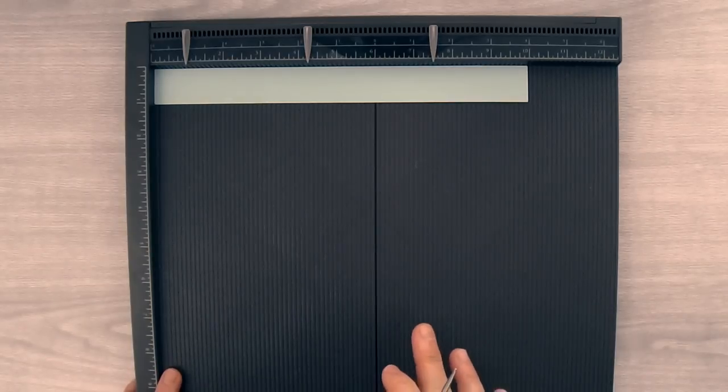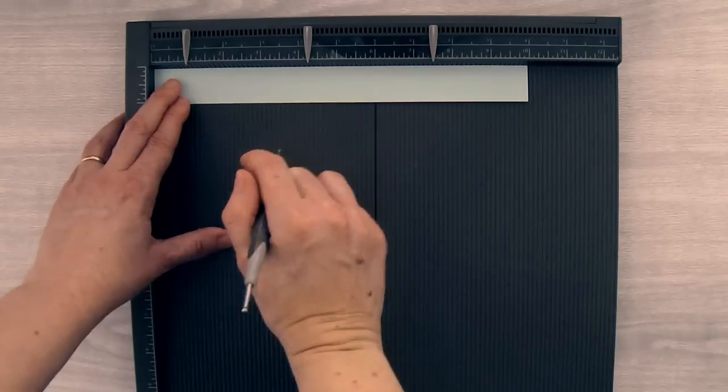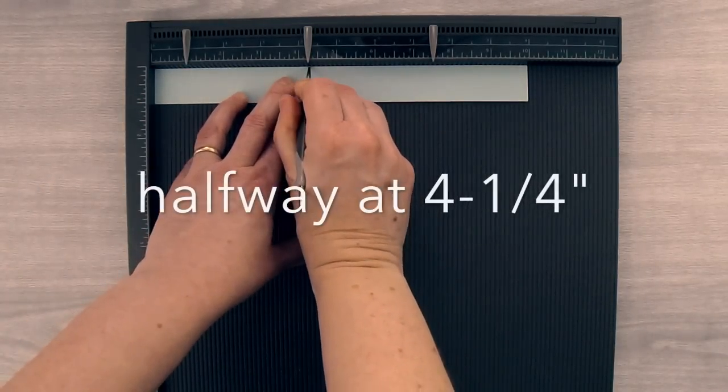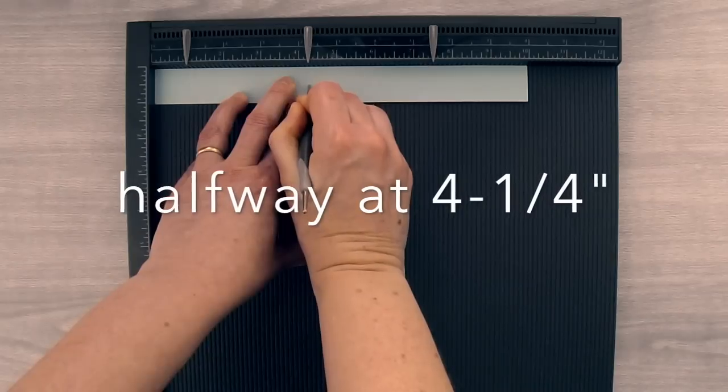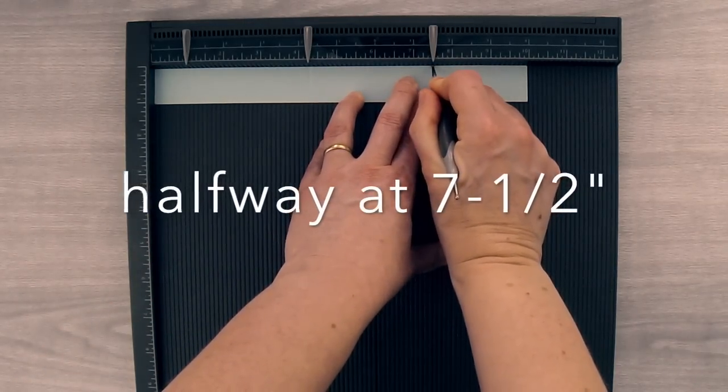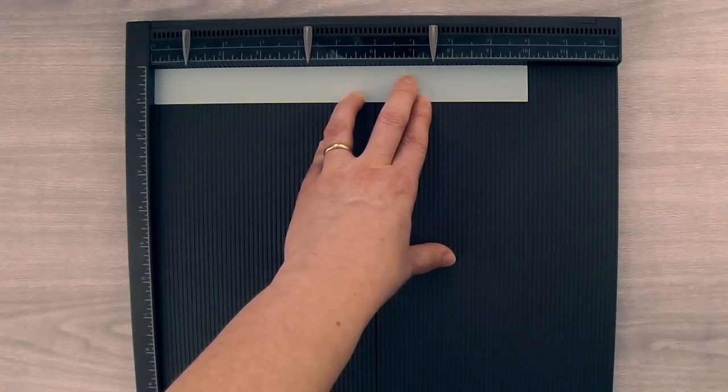When we're scoring this piece, we're only going to score halfway down the strip. Score at the one inch mark just halfway, score at the four and a quarter inch mark just halfway, and score at the seven and a half inch mark but just halfway. You can put your scoring tool aside.